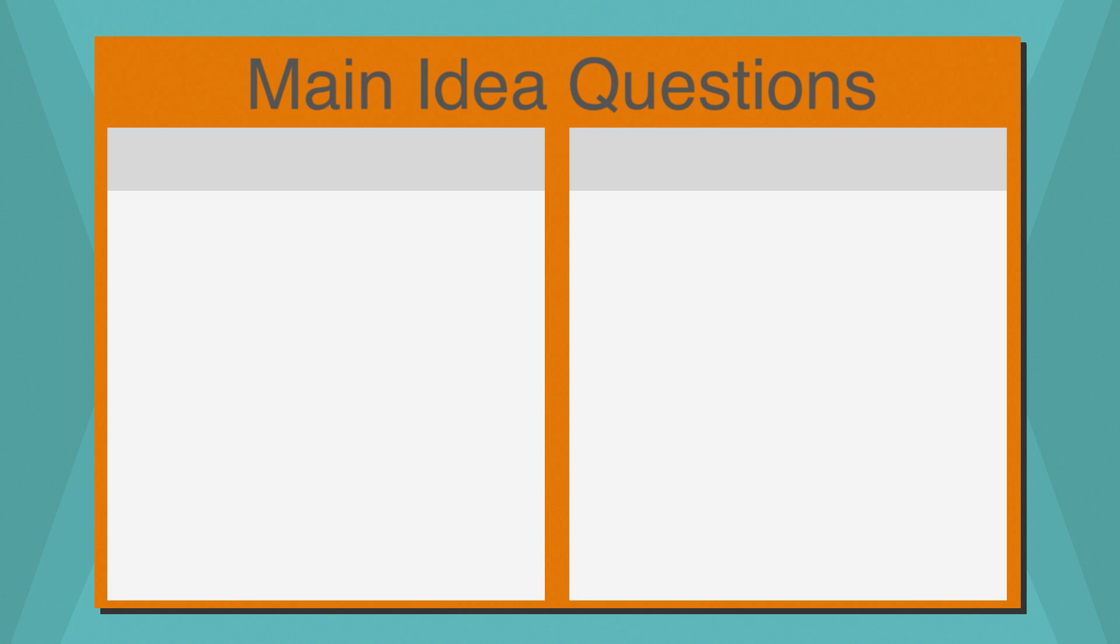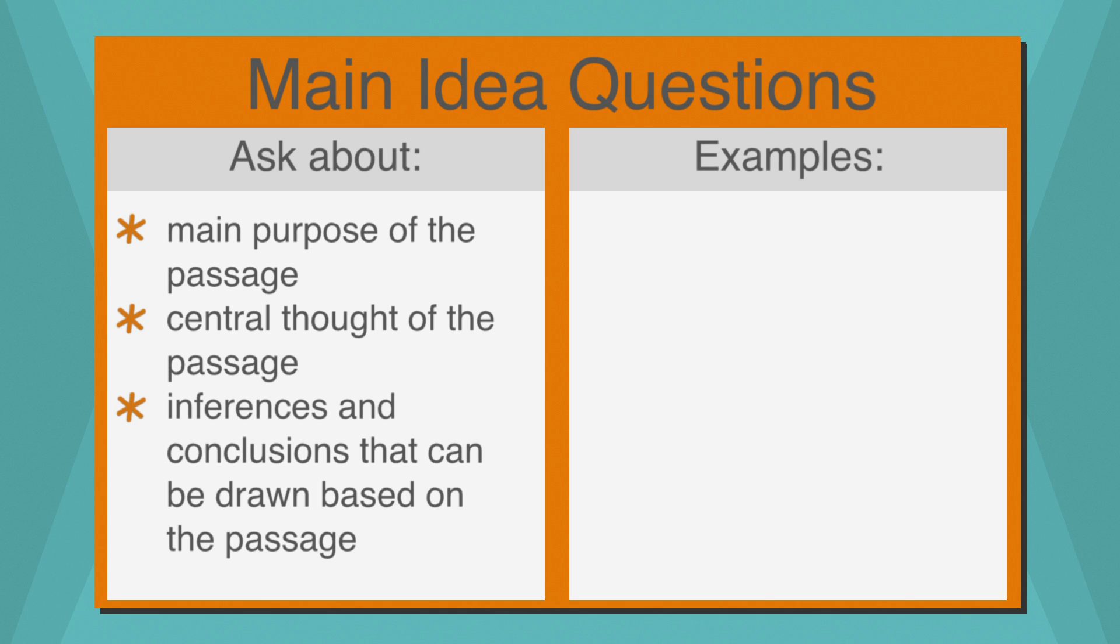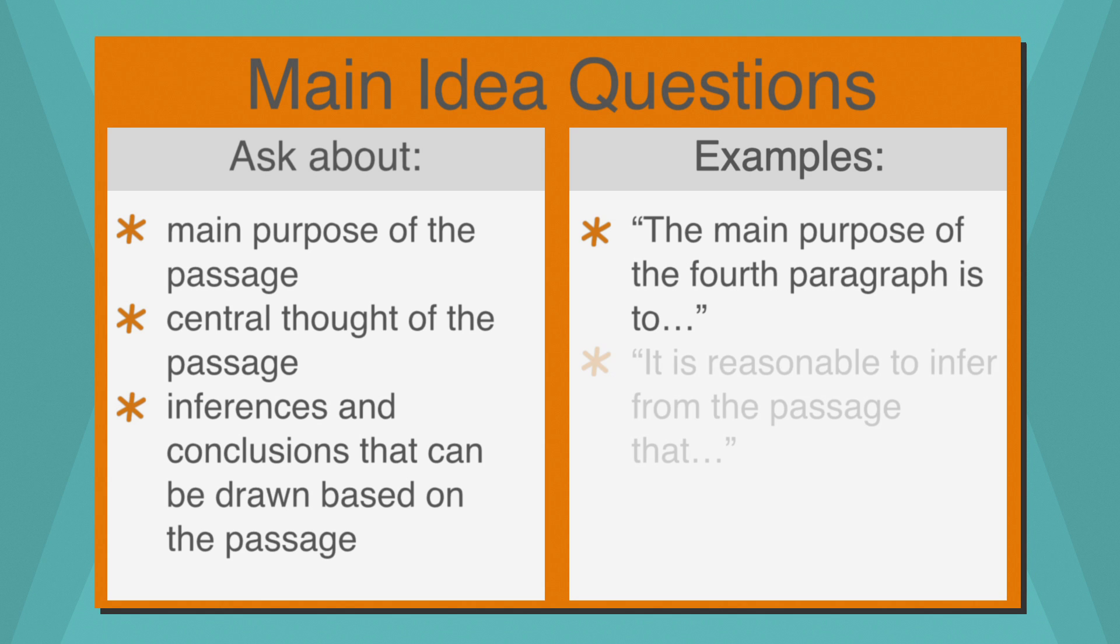Main idea questions are prevalent in the reading section. They ask that you identify the main purpose or central thought of the passage, draw inferences, and conclusions. Examples of the language used in main idea questions include: the main purpose of the fourth paragraph is to, it is reasonable to infer from the passage that, and which of the following best describes.